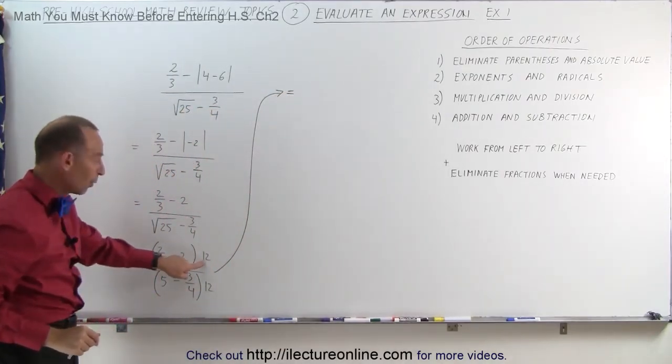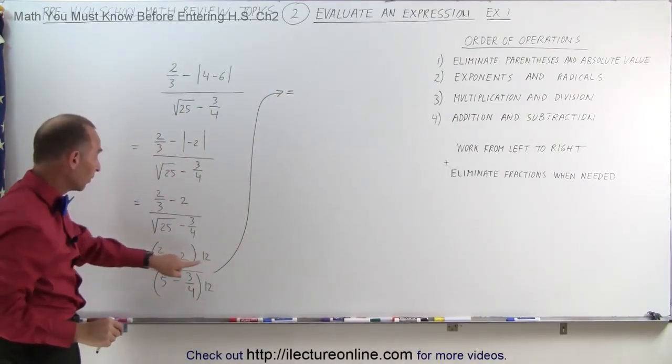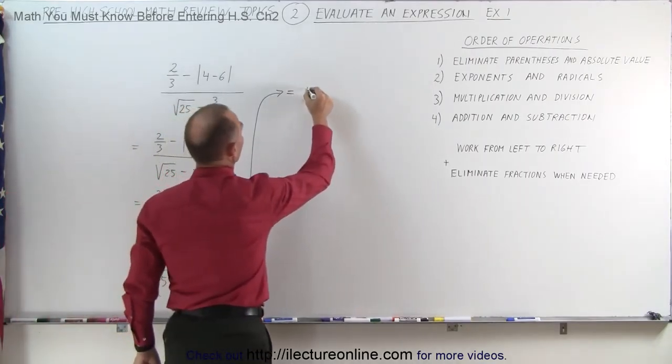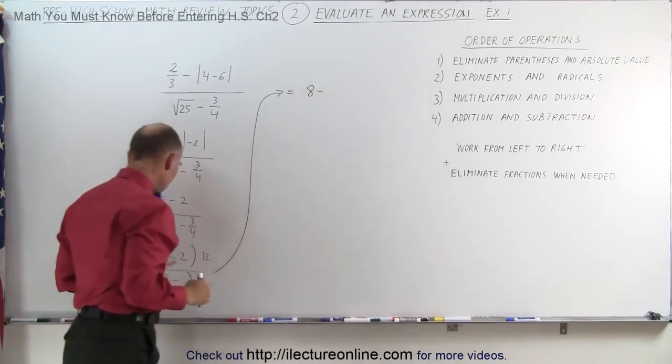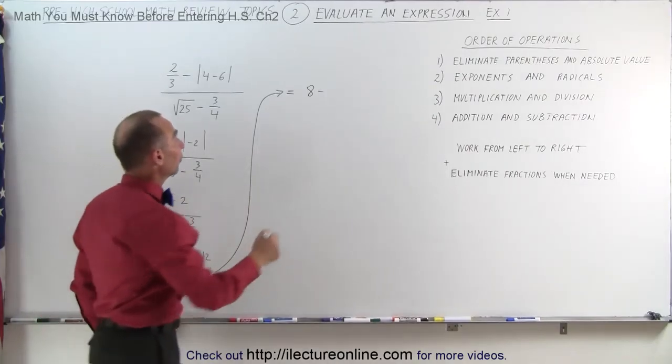This is equal to, well, 3 goes into 12 four times, so 12 divided by 3 is 4. 4 times 2 is 8 minus, a minus 2 times 12 is a minus 24.